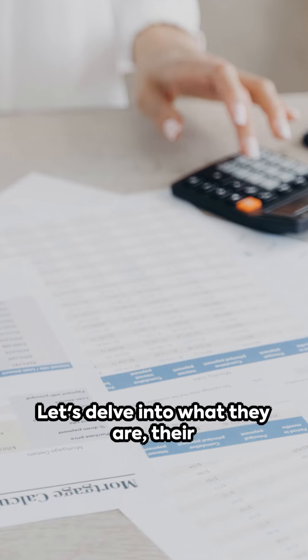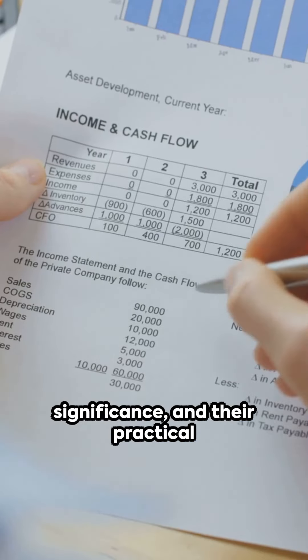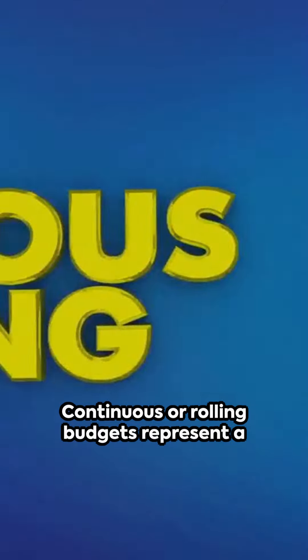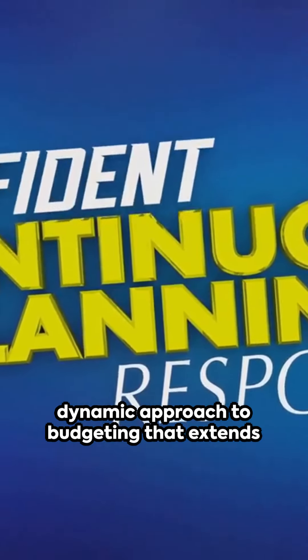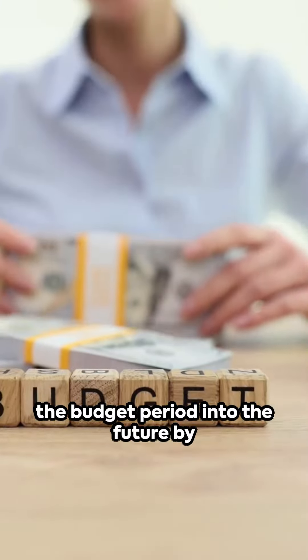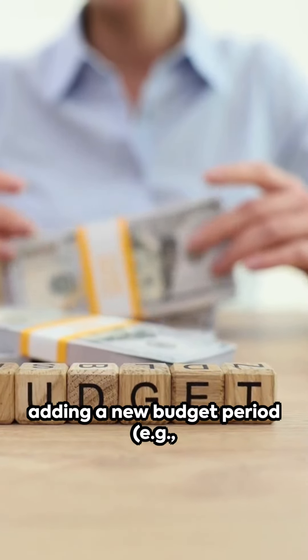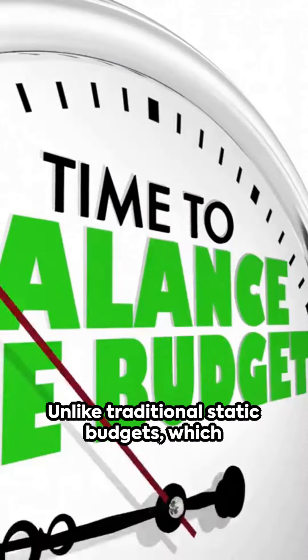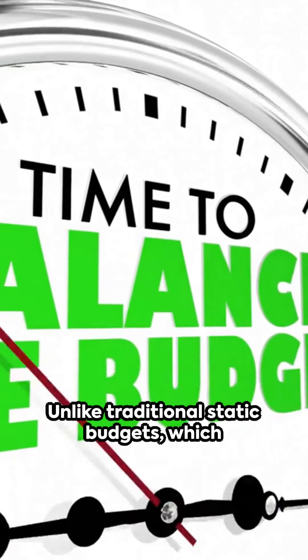Let's delve into what they are, their significance, and their practical application to help you grasp this crucial topic. Continuous or rolling budgets represent a dynamic approach to budgeting that extends the budget period into the future by adding a new budget period, for example, month or quarter, as the current period concludes.